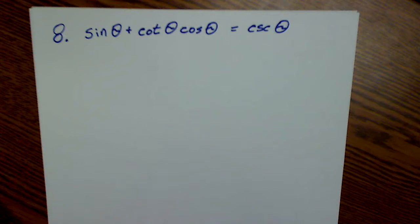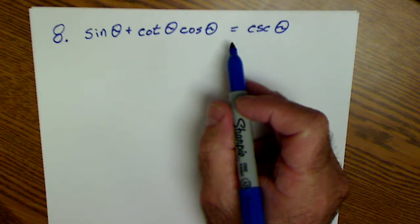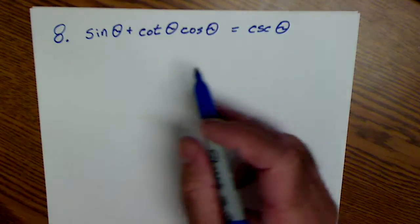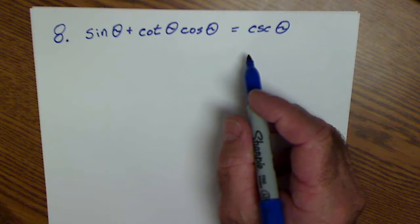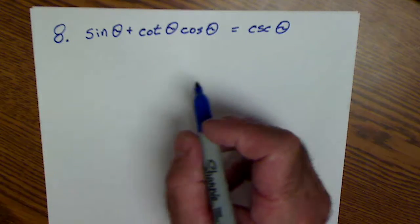Alright, let's look at solving or verifying some of these identities. There's an equation sign in the middle. I want to work on the more complex side and simplify it and put it into the building blocks of sine and cosine.